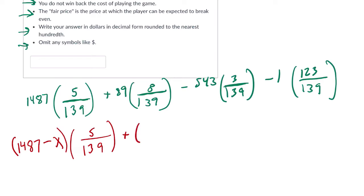Then, we want to add in 89 minus x, times 8 over 139. Then, we want to subtract, well, here we have 543. And here, because we're subtracting, I guess I'm going to write like this, plus x. Right, we're subtracting 543 and x, the amount of the game. We're subtracting both of them.